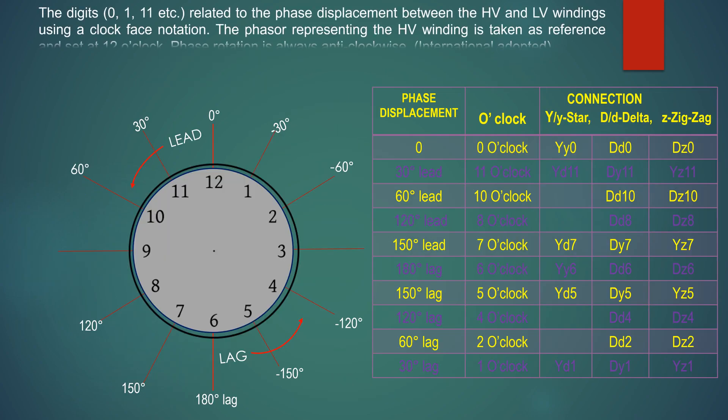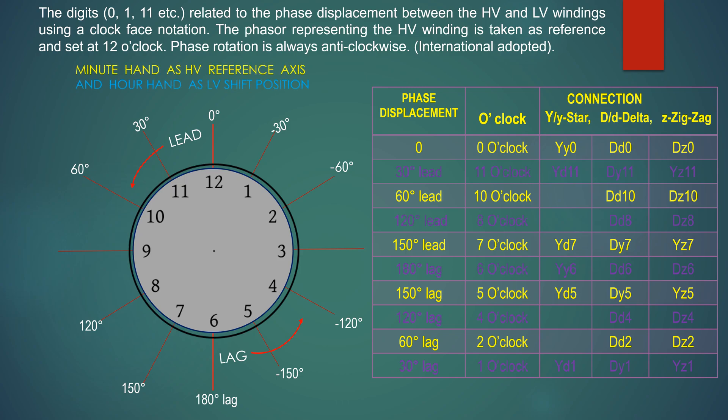The digits 0, 1, 11, etc. relate to the phase displacement between the HV and LV windings using a clock phase notation. In the phasor representation, the HV winding is taken as reference and set at 12 o'clock.